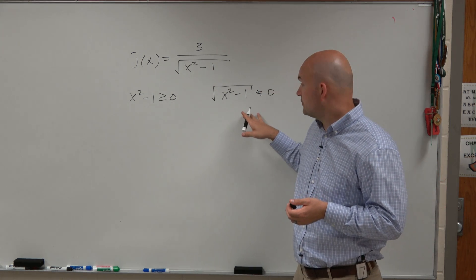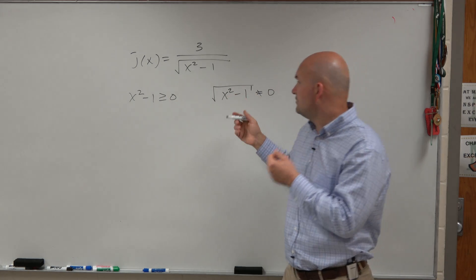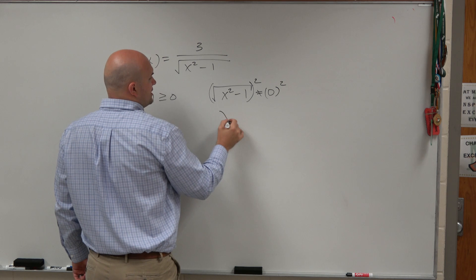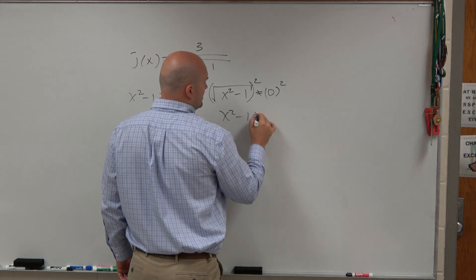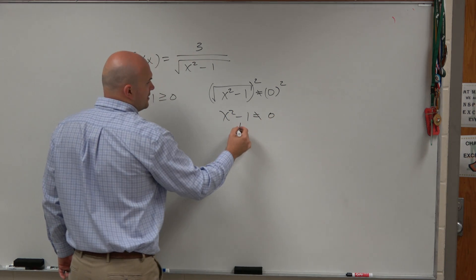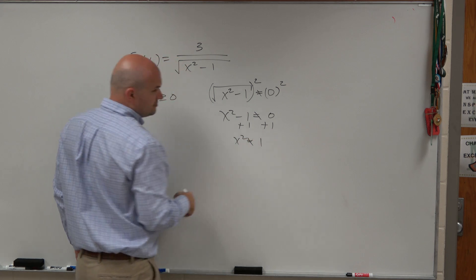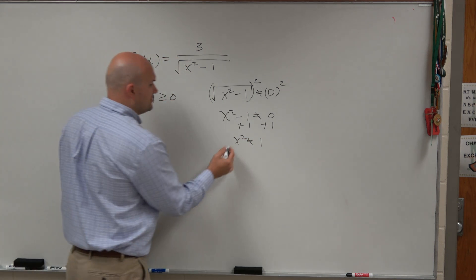Now I'm going to do this one first. So if we're going to solve, find which values, you're going to square both sides, and you're left with x squared minus 1 cannot equal 0. Add 1, add 1. x squared cannot equal 1. And then to solve for x, you're going to square root both sides.